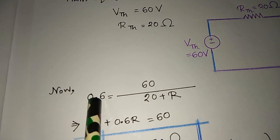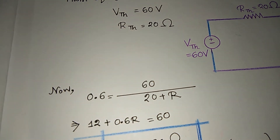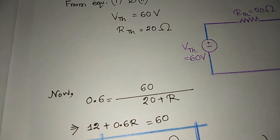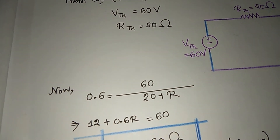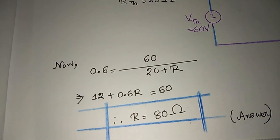We calculate the R-Thevenin value to be 60 Ohm. To calculate the obvious value of R-Thevenin, we arrive at the R value.